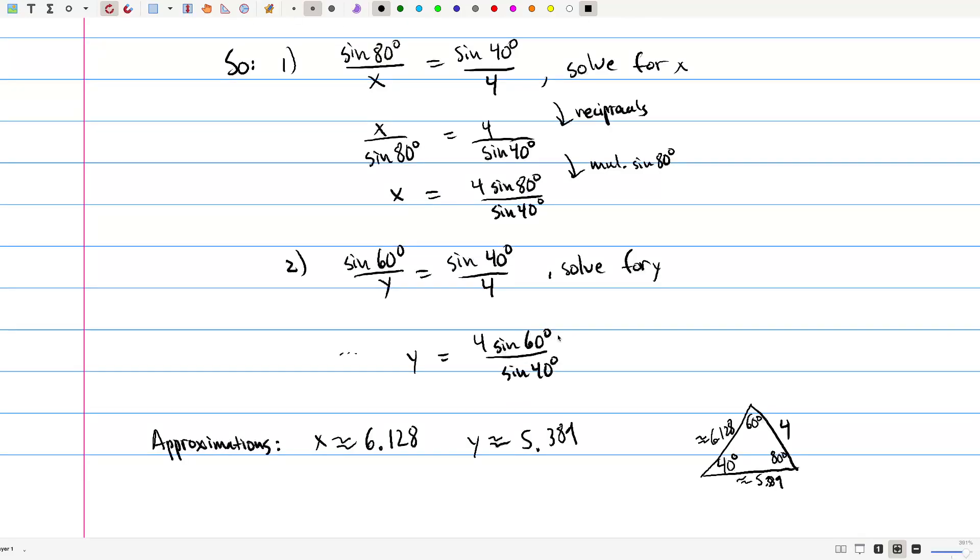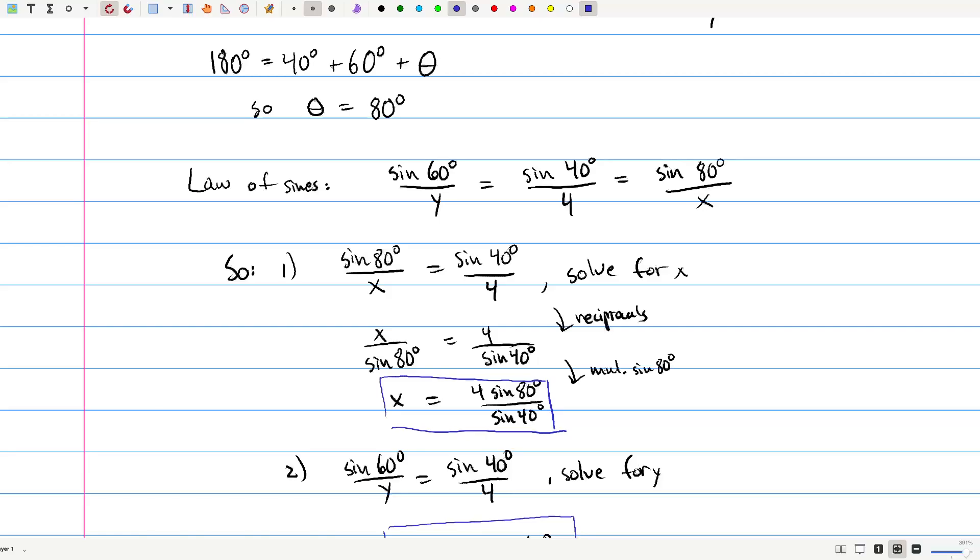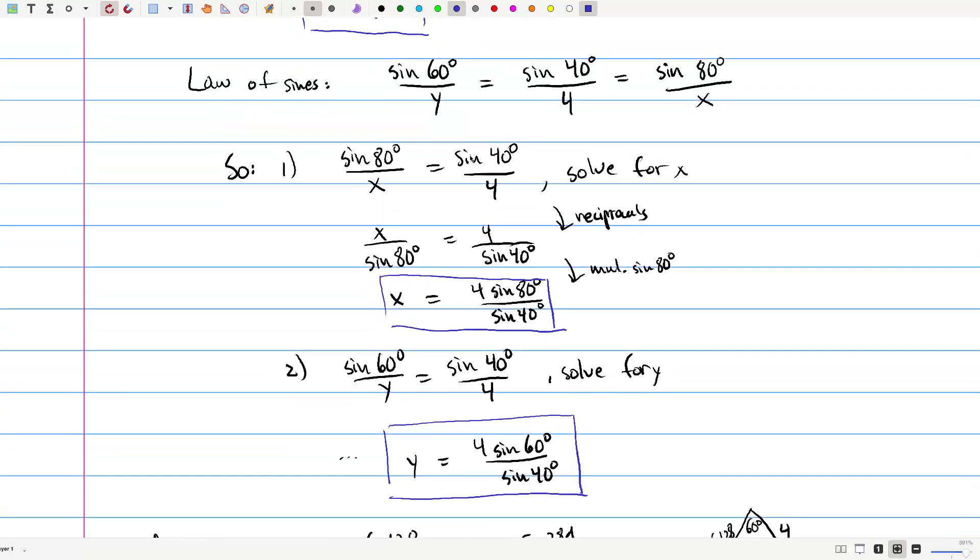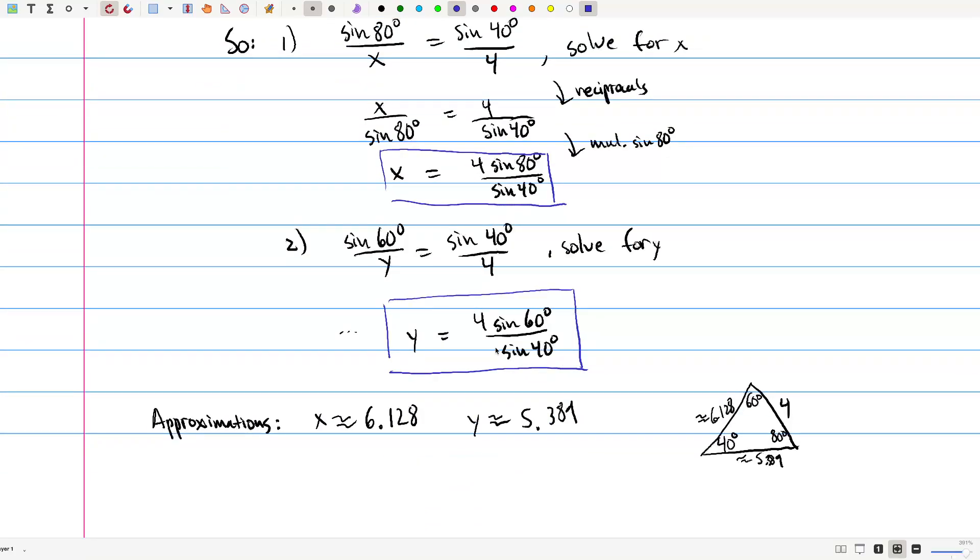Anyway, so let's just box these values, the exact ones, along with the value for theta. And that's how you can solve for all the sides of a triangle for certain kinds of triangles where the law of sines works. Okay. Well, I'll see you later. Thank you.